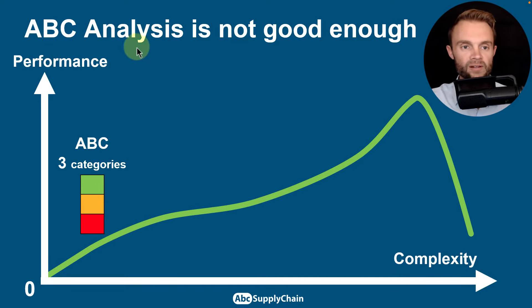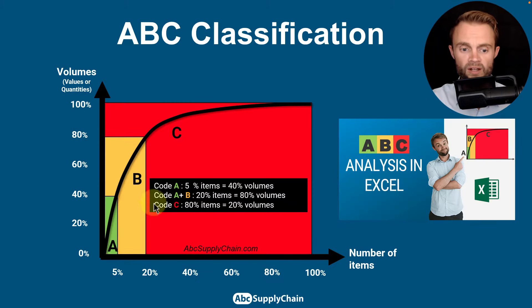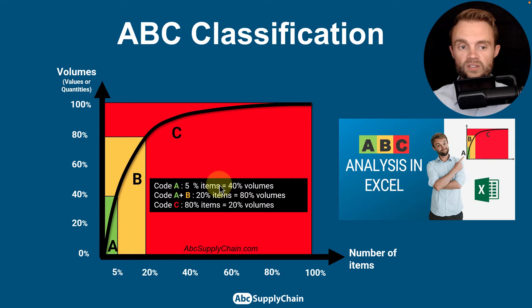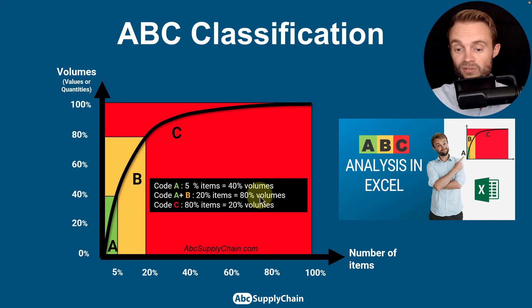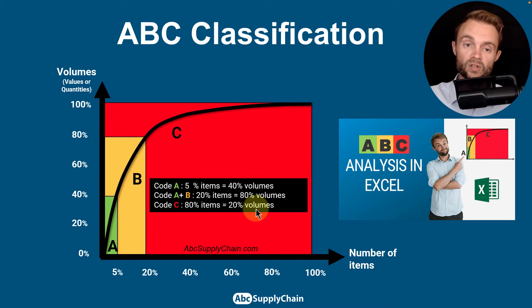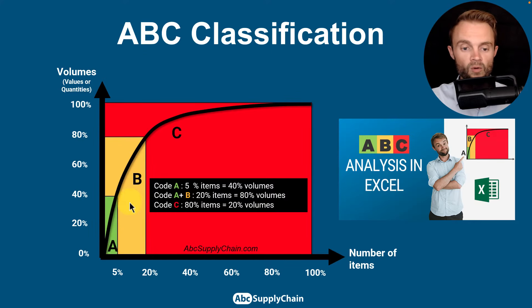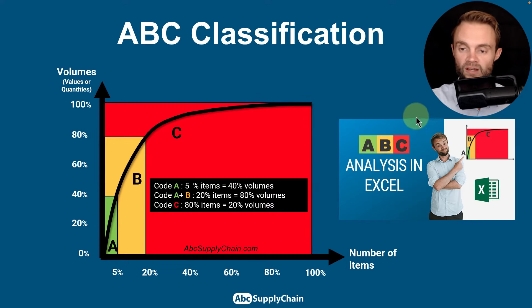Before going to ABC XYZ, let me quickly review why ABC analysis alone is not good enough. In ABC, you have only three categories: A codes — 5% of your items representing 40% of your volumes. A plus B codes represent 20% of items and 80% of volumes. C codes are 80% of items representing 20% of volumes. You can apply this for products, suppliers, or customers, but if you want to go further, check my full tutorial with an example in Excel.